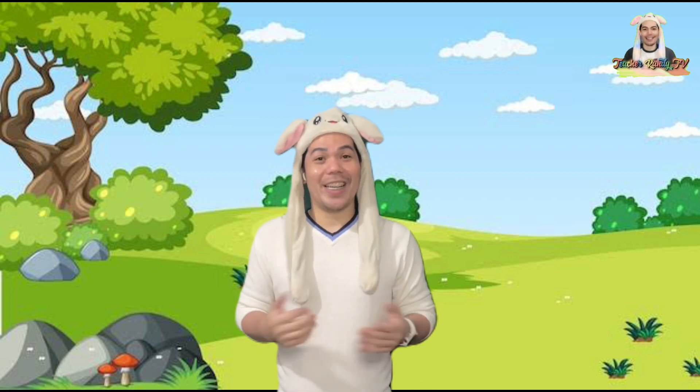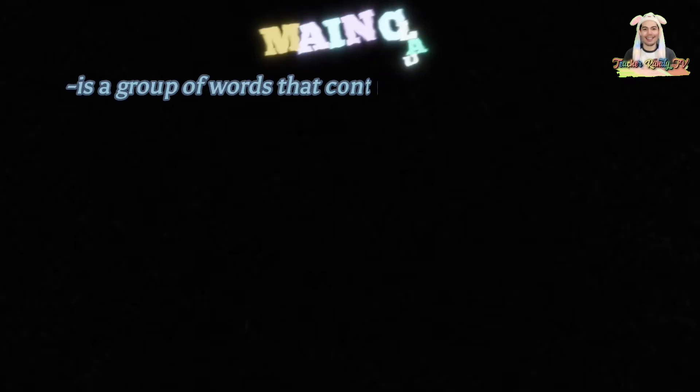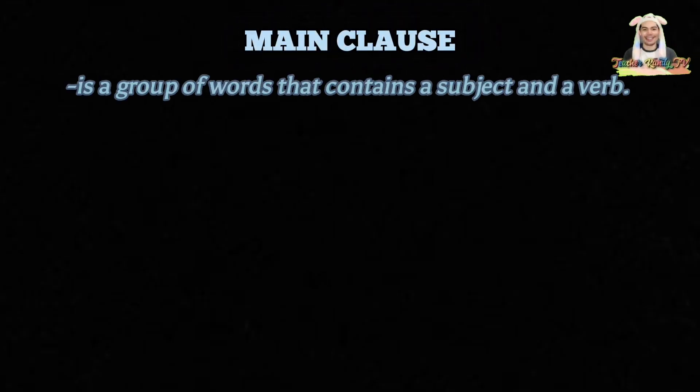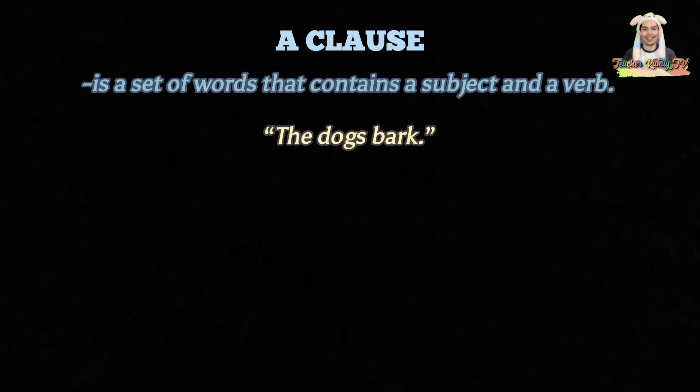What is a main clause? You remember? We included this as the third characteristic of a sentence — the two parts of a main clause. A main clause is a group of words that contains a subject and a verb, like "the dogs bark." A clause is a set of words that contains a subject and a verb.